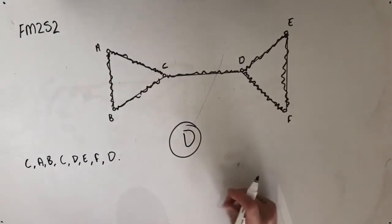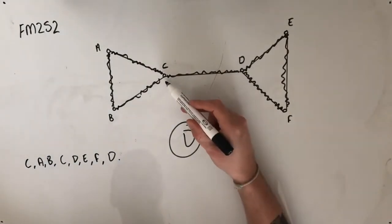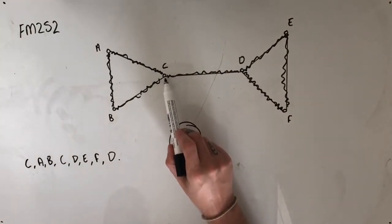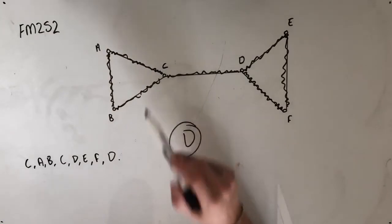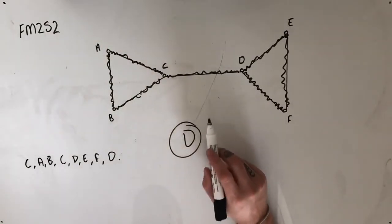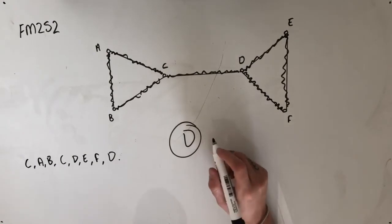To go through the other options and tell you why they aren't correct: a Hamiltonian path—well, with anything Hamiltonian, we use every vertex once and once only. We can see here that the first vertex we use twice is C, and that's why it's neither a Hamiltonian path nor a Hamiltonian cycle.